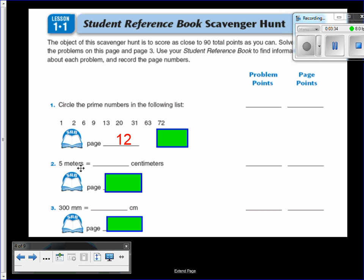Problem number two, it says five meters equals how many centimeters. If you don't remember how many centimeters are in one meter, go ahead and take a look at page 184. Even if you remember what these things are, please remember to put these page numbers in this slot. Number three, 300 millimeters equals how many centimeters. Go ahead and take a look at page 184 in your student reference book.